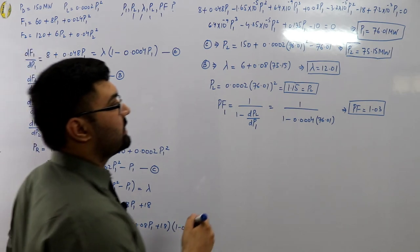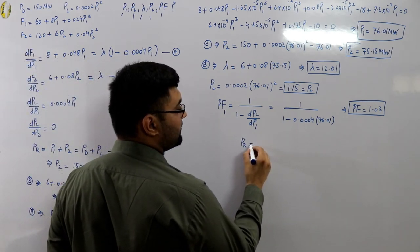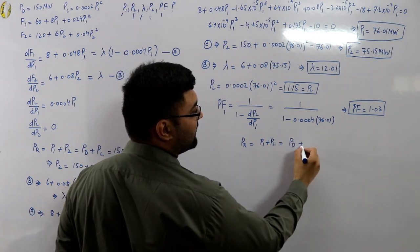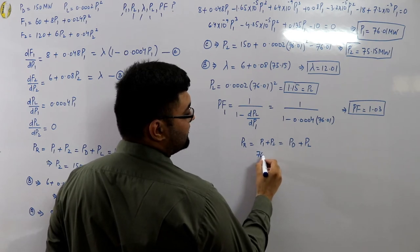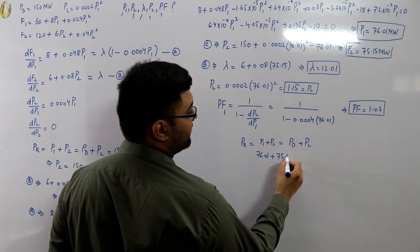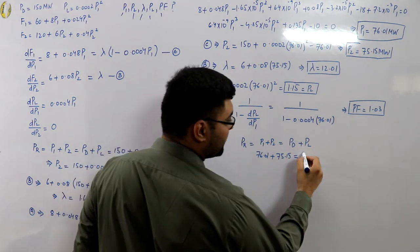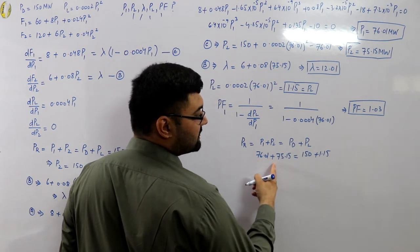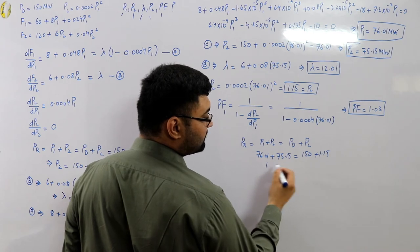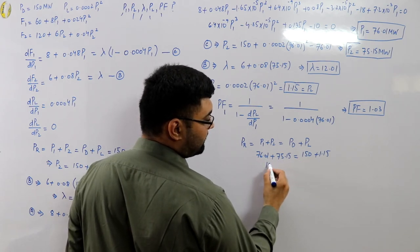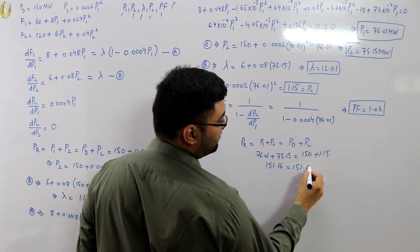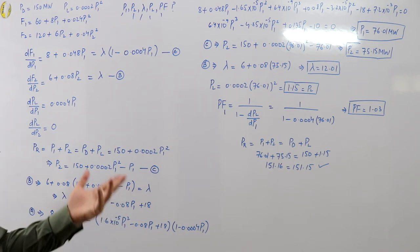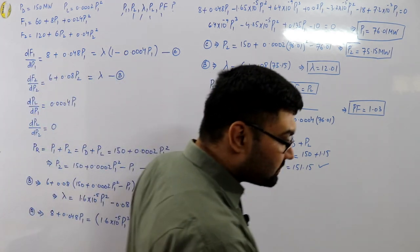We can verify: P1 + P2 = 76.01 + 75.15 = 151.16, and power demand + losses = 150 + 1.15 = 151.15. The calculations are correct. That is assignment number three.